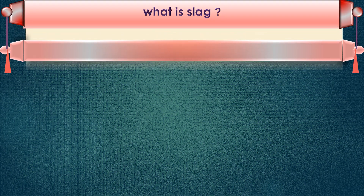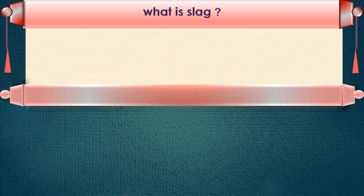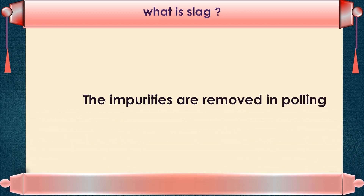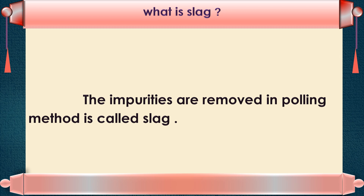What is slag? The impurities removed in the poling method are called slag. The impurities are removed either as gases or they get oxidized and form scum over the surface of the molten metal. This is called slag.